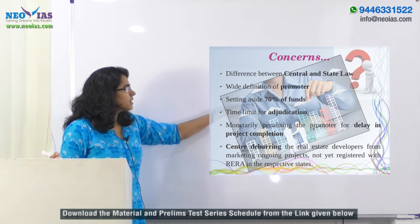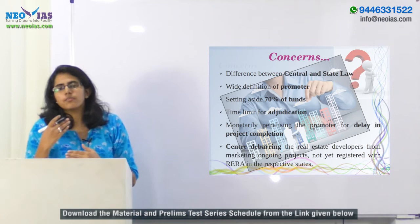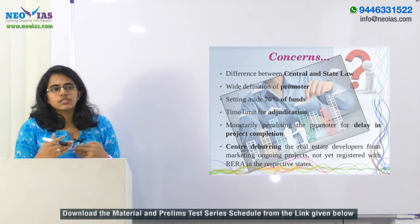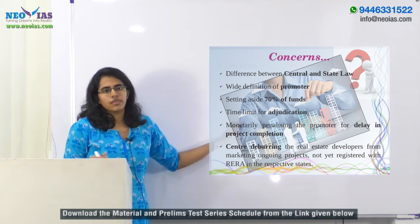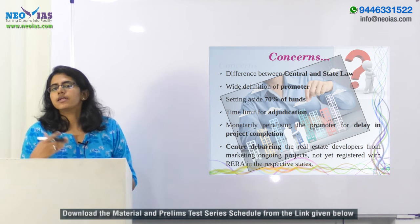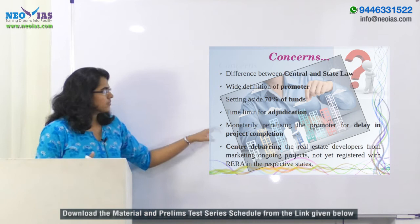Regarding the provision of setting aside 70 percent of funds: a situation can arise where the construction cost is less than 70 percent and the cost of land is more than 30 percent, which is a concern. The 60-day time limit for adjudication is also a concern — the consumer courts had a 90-day timeline that didn't function properly, so it remains to be seen how this will be properly implemented.